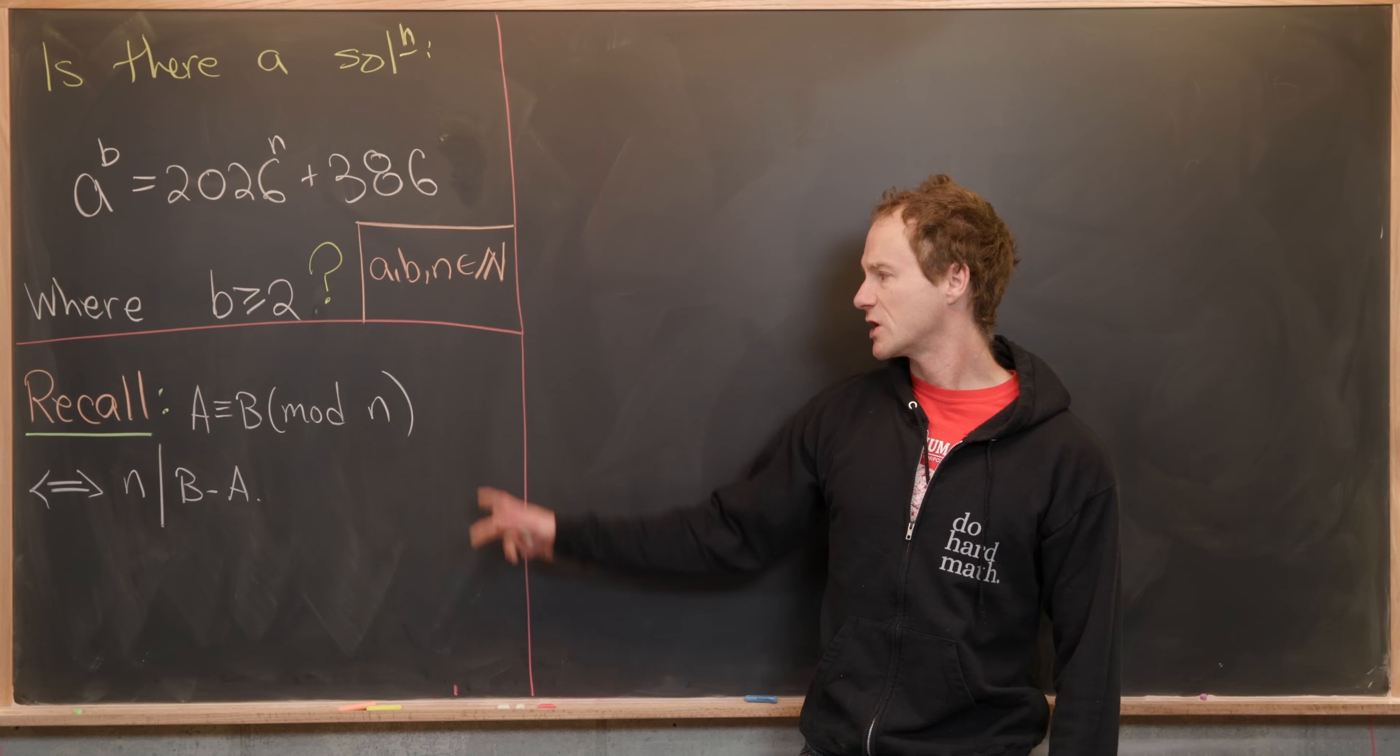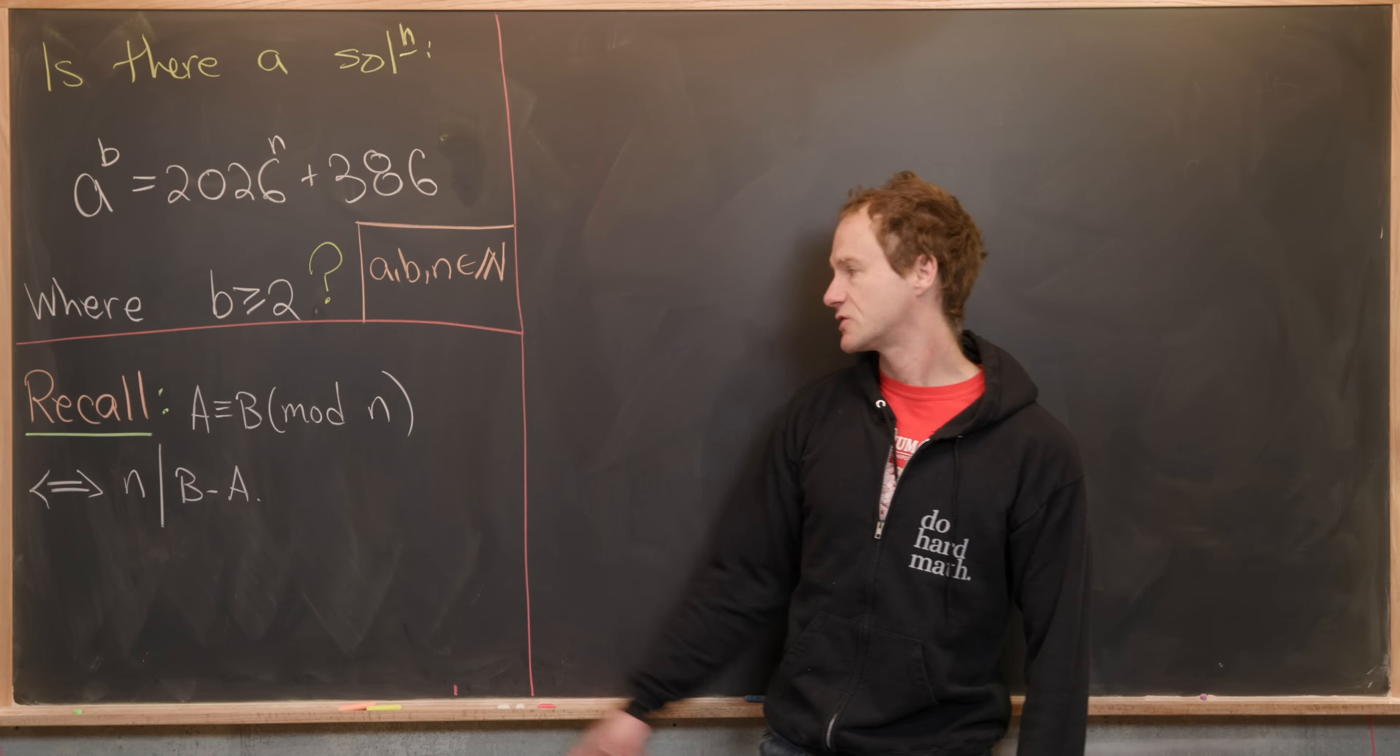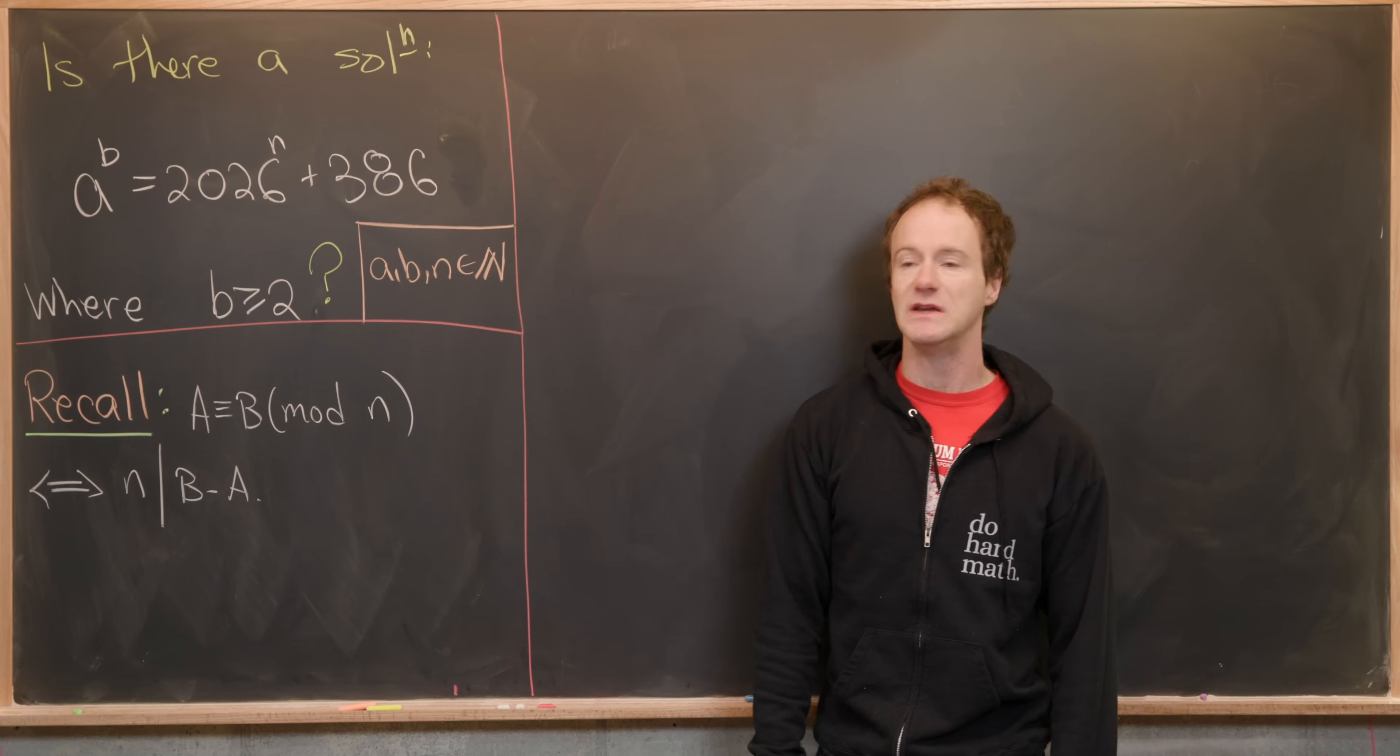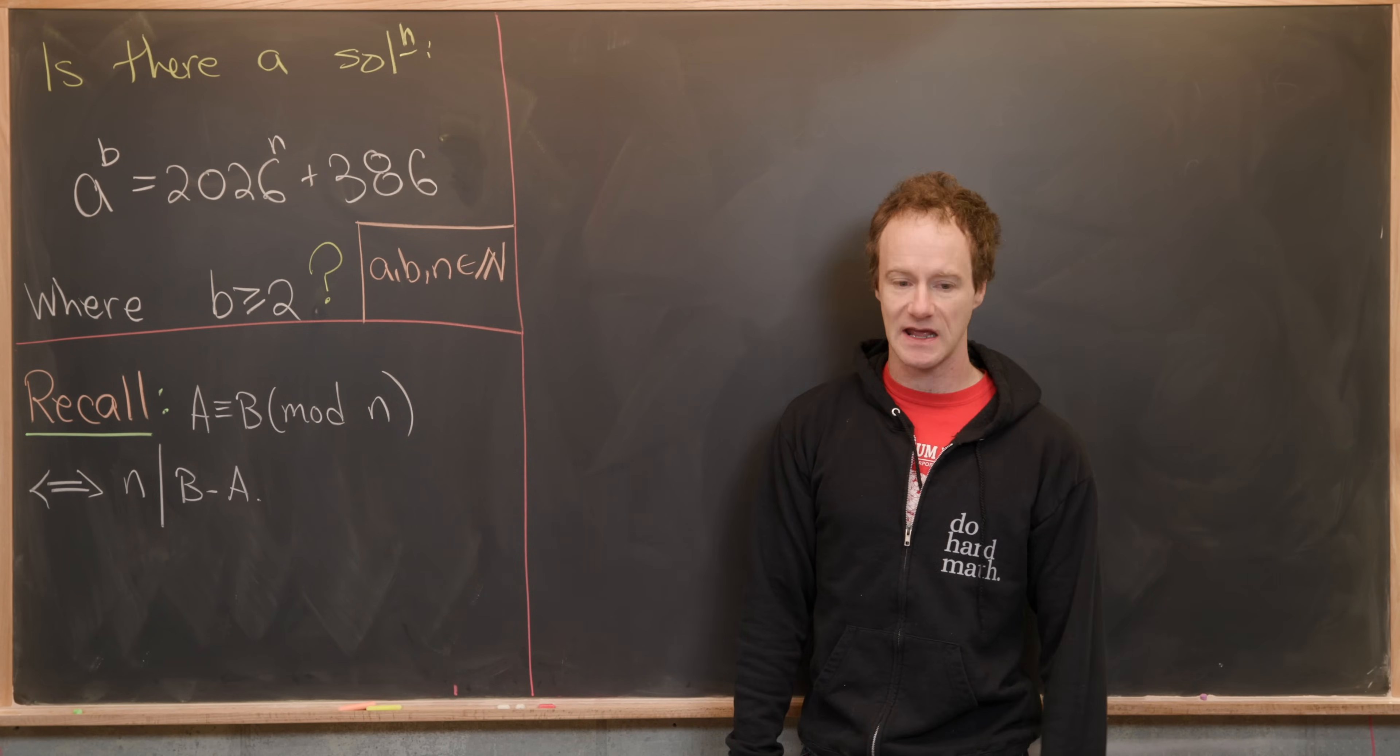Okay and we're going to use the notion of congruence modulo n. Let's recall that a ≡ b (mod n) if and only if n divides b - a. In other words a and b have the same remainder when dividing by n.